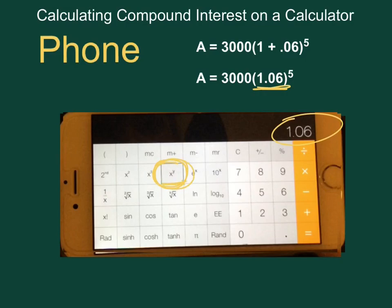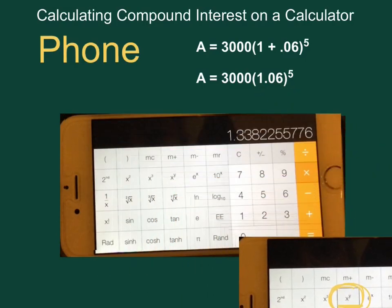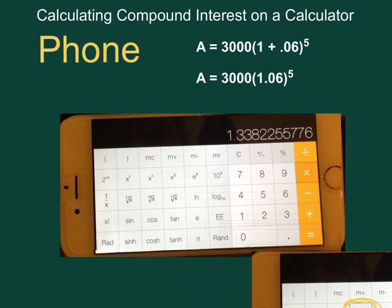So 1.06, type in X to the Y, and then type in your 5. When you hit enter, you will get your same long number right there.